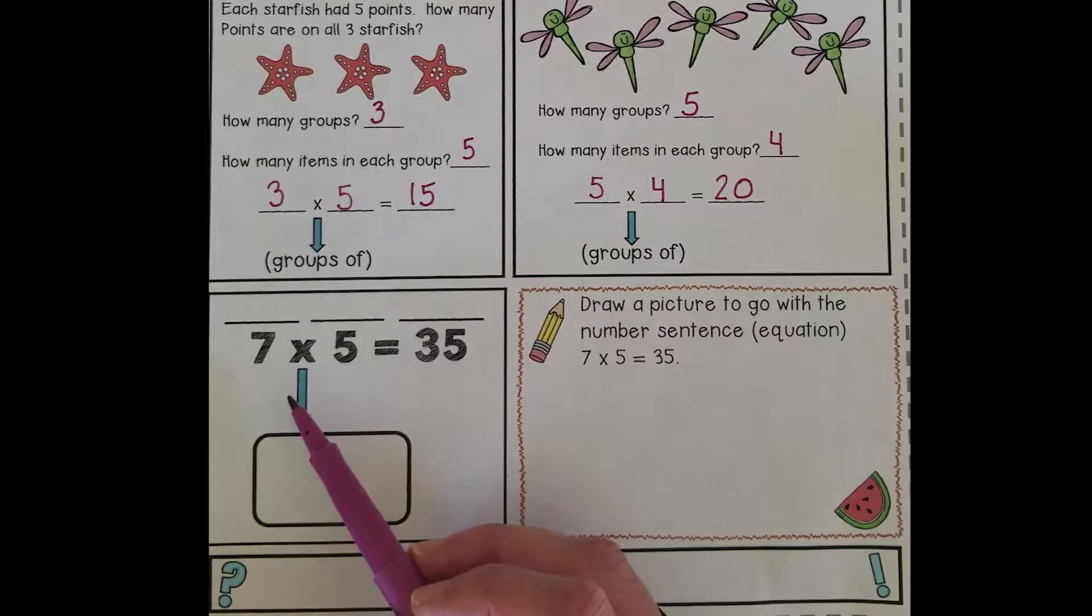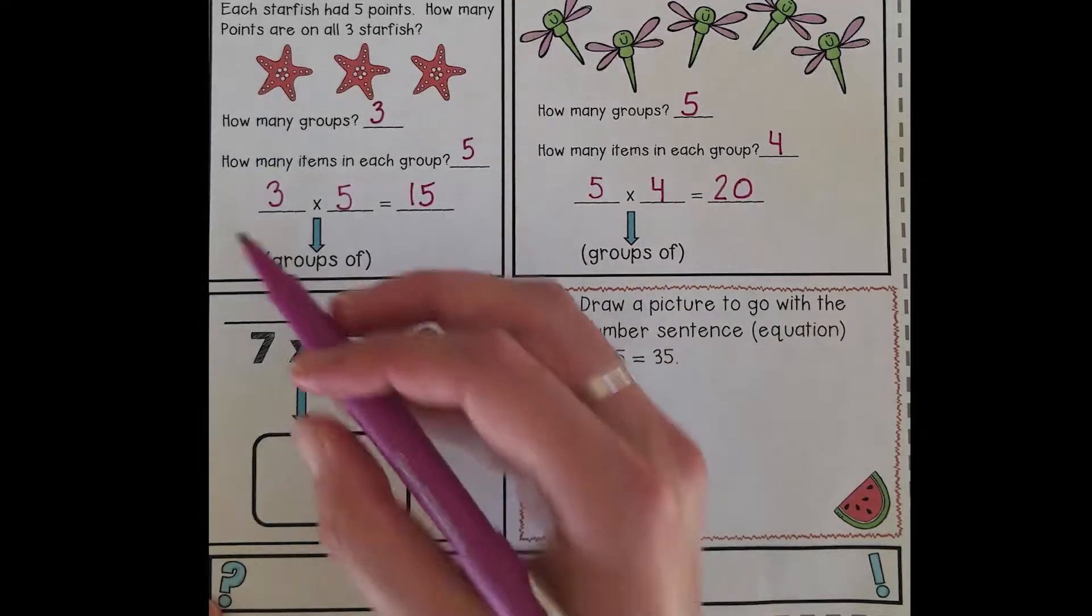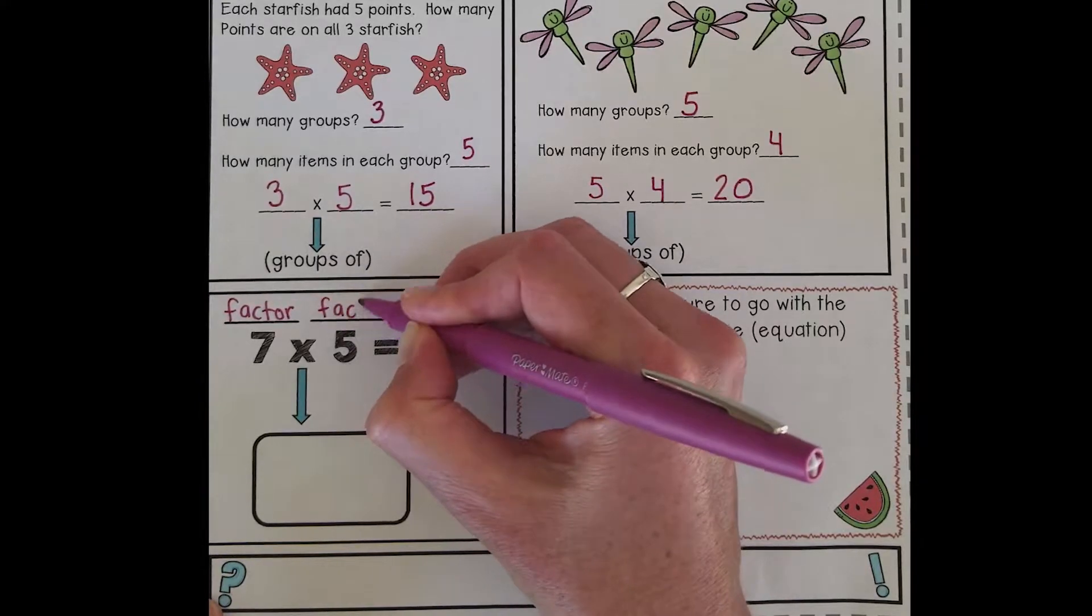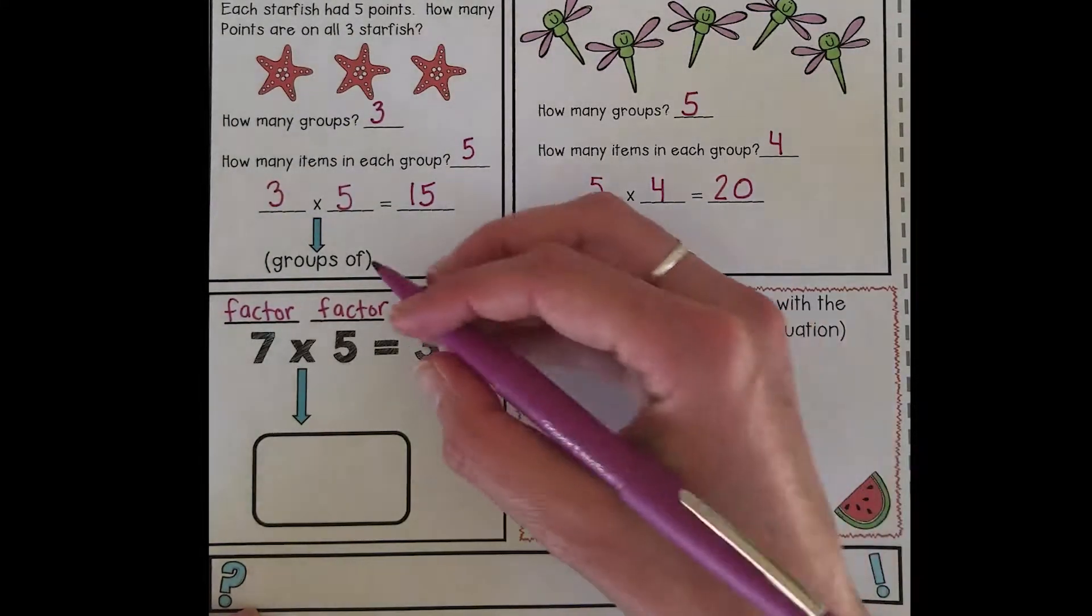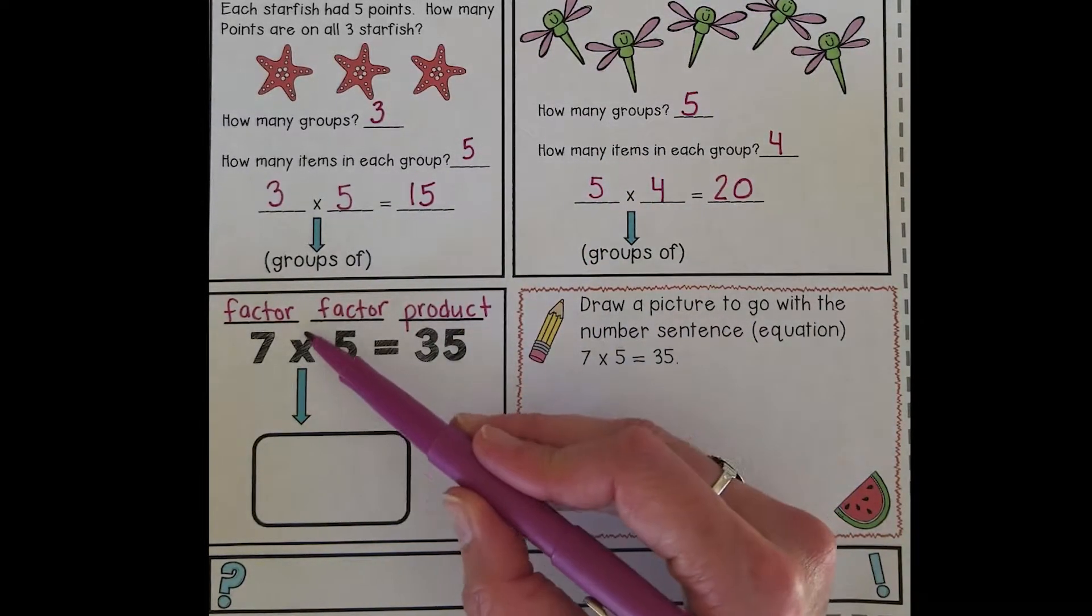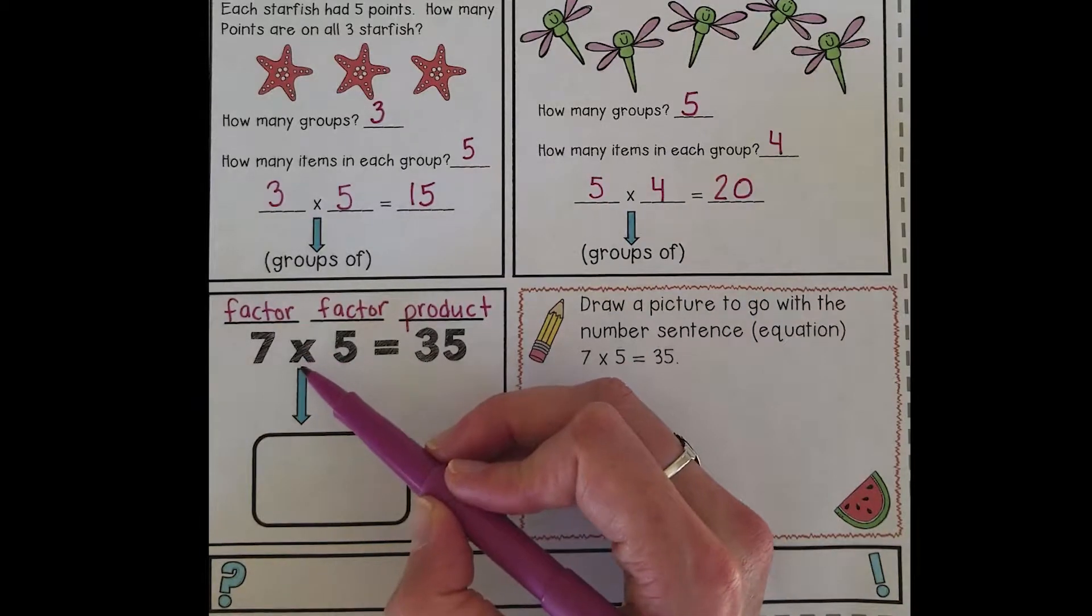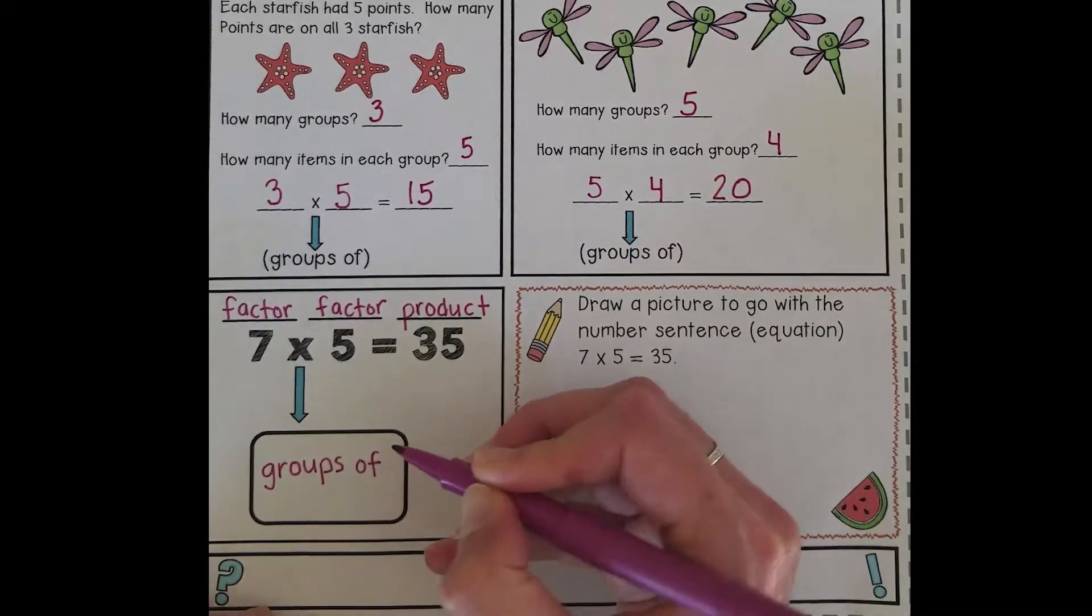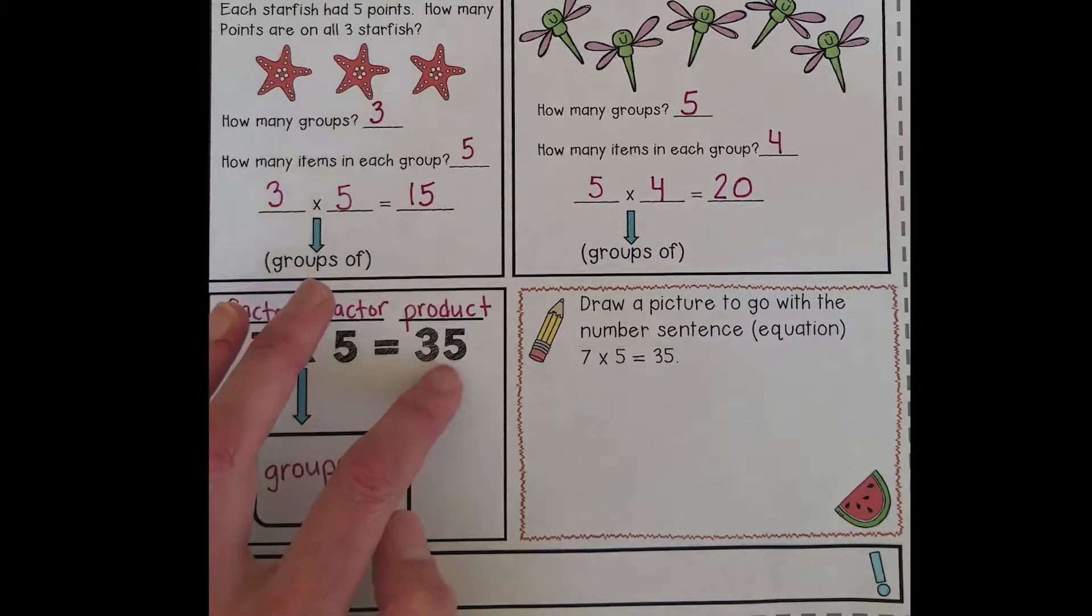Check out this number sentence or equation down here. Did you know that each part of this number sentence has a name? The seven and the five are called factors. Seven's a factor and five is a factor. The answer to a multiplication problem is called a product. We can read this as seven times five equals thirty-five, but did you know that this multiplication symbol can also be read by saying 'groups of'? So I can read this: seven groups of five equals thirty-five.